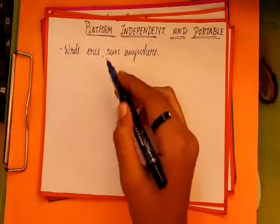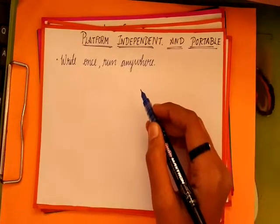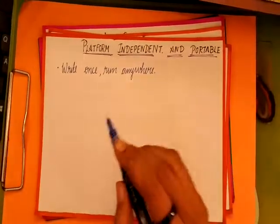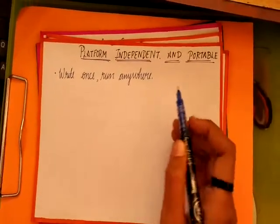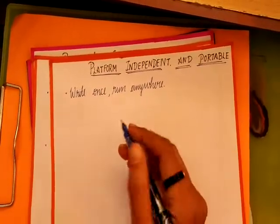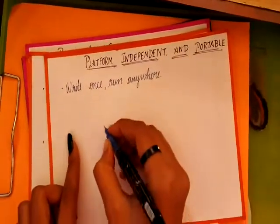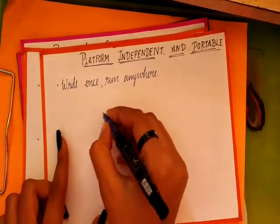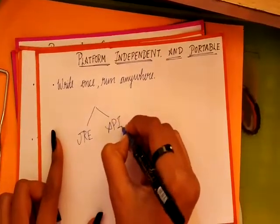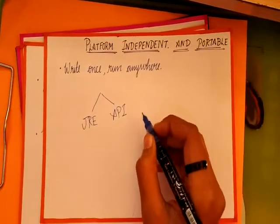The next feature is platform independent and portable. Java uses the byte code concept, that is an intermediate code. That code can run on any machine and it supports all the systems — that is, write once and run anywhere. The byte code concept is the most important here, and this is the most important feature of Java. Java has its own platform with two parts: JRE, which is Java Runtime Environment, and API, which is Application Programmable Interface.